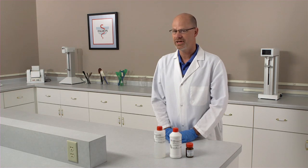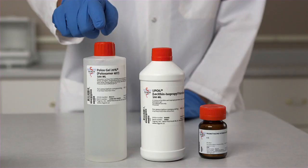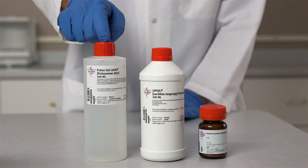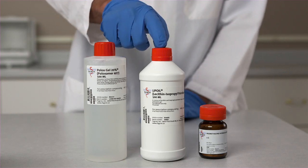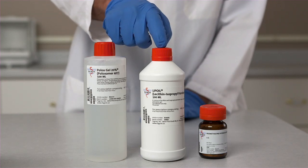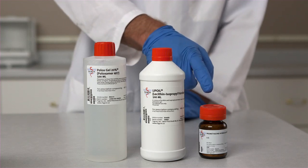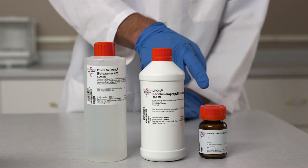The ingredients needed for this preparation are Fagron's Paloxamer 20% gel, lecithin isopropyl palmitate or lip oil as it's commonly known, and an active ingredient. In this case, we're going to be using promethazine.